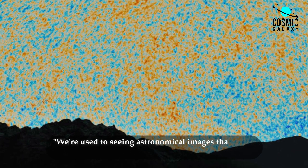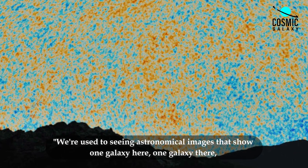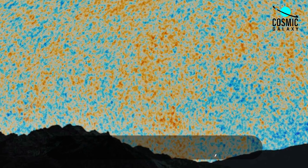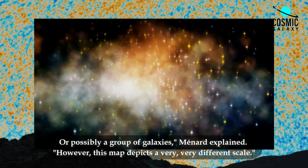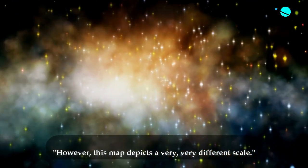We're used to seeing astronomical images that show one galaxy here, one galaxy there, or possibly a group of galaxies, Menard explained. However, this map depicts a very, very different scale.